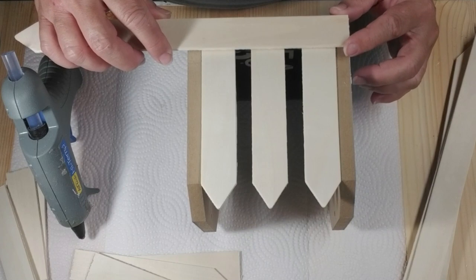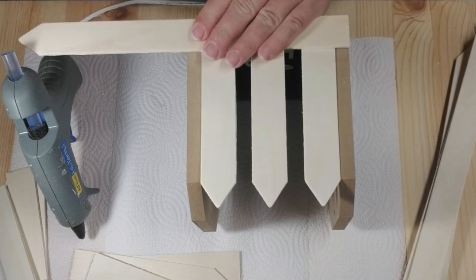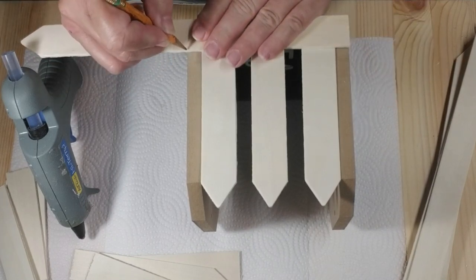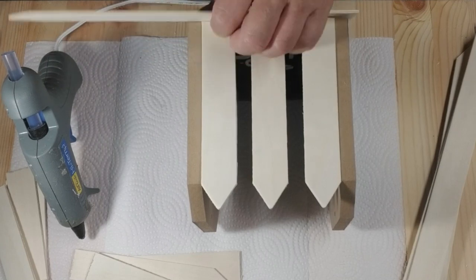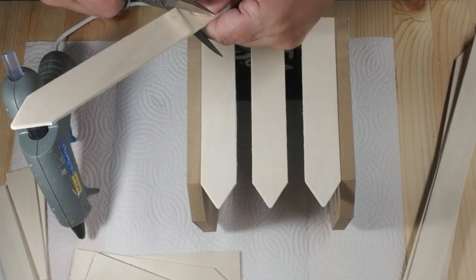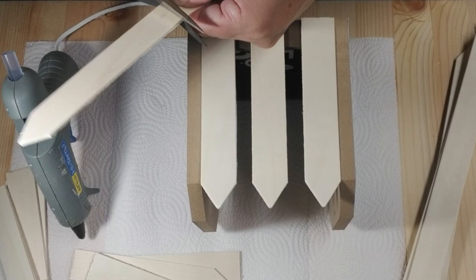To make this look even more like a picket fence, I'm going to use a board on the bottom and then about three quarters of the way up. So I'm just going to use two more sticks, cut them to size, and then hot glue them in place.